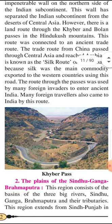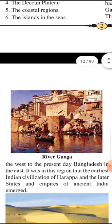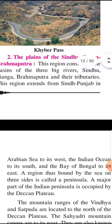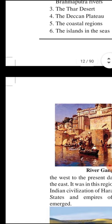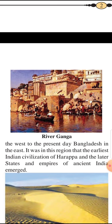See the Khyber Pass — the picture they have given so nicely. Second point is the plains of the Sindhu, Ganga, and Brahmaputra. This region consists of the basins of three big rivers — Sindhu, Ganga, Brahmaputra — and their tributaries. This region extends from Sindhu, Punjab in the west to present-day Bangladesh in the east. It was in this region that the earliest Indian civilization of Harappa and the later states and empires of ancient India emerged.